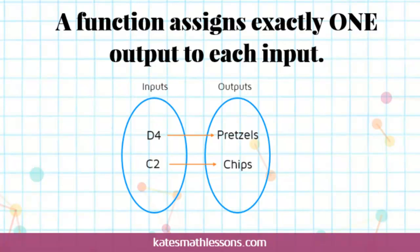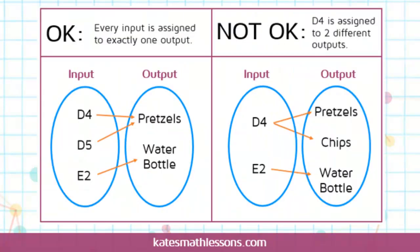Same thing with C2 — if I plug in C2 and it gives me chips, the next time I plug in C2, it has to give me chips again. Remember, in order to be a function, it has to assign exactly one output to each input value.